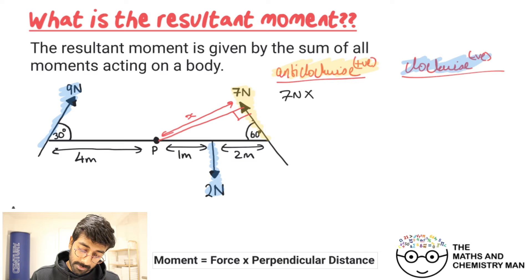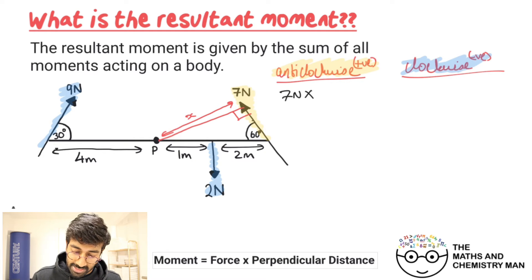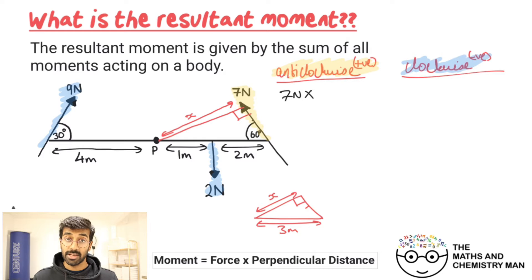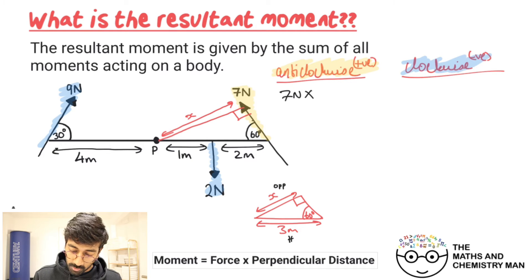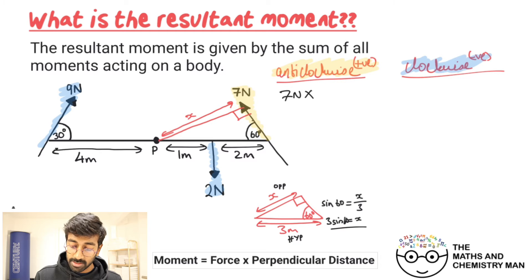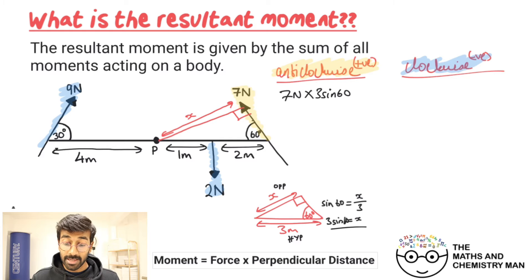Making a sketch of that right angle triangle: the hypotenuse is three meters, we have a right angle, the angle is 60 degrees, and we need to find the opposite side x. Using SOHCAHTOA, sine 60 equals opposite over hypotenuse, so x equals 3 sine 60. We multiply the seven Newtons by 3 sine 60 to get the anti-clockwise moment.